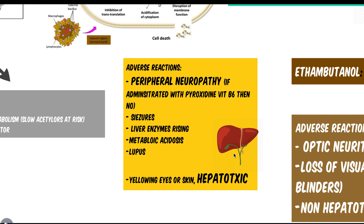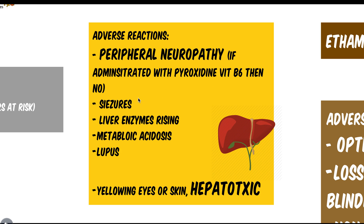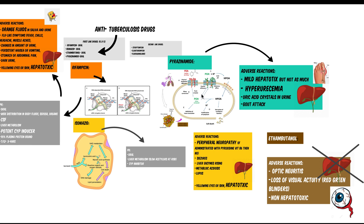The adverse reactions of isoniazid include peripheral neuropathy, which can be avoided if administered alongside pyridoxine (vitamin B6). It also leads to seizures and CNS effects, rising liver enzymes, metabolic acidosis, drug-induced lupus, and hepatotoxic effects. Isoniazid possesses quite a few adverse reactions.